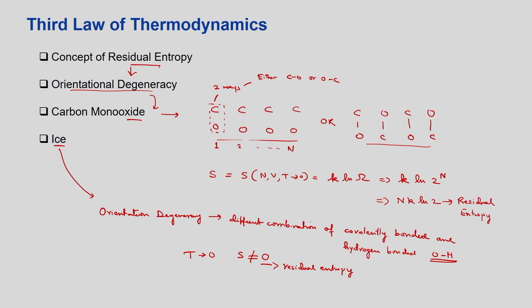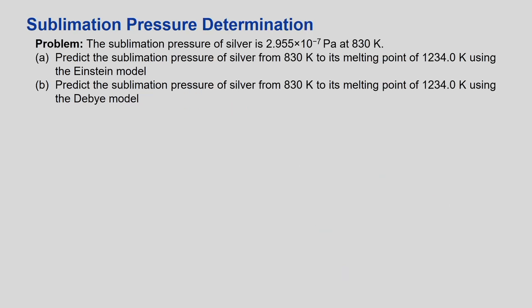Now let us go to the problem statement. It says: the sublimation pressure of silver is given. Predict the sublimation pressure of silver from 830 K to its melting point, 1234 K, using the Einstein model. As mentioned, if you want to predict pressure at different temperatures you need a reference temperature and pressure, which is given as the experimental value. We solve it first using the Einstein model and then using the Debye model.